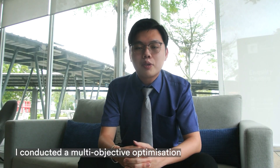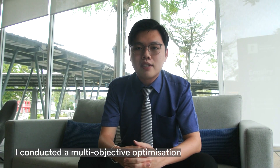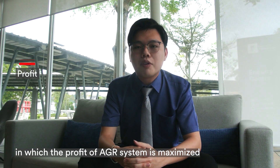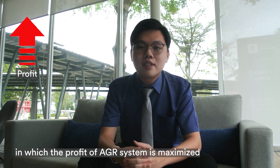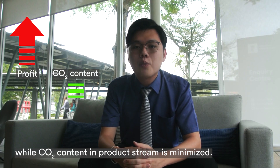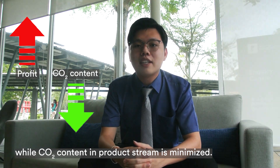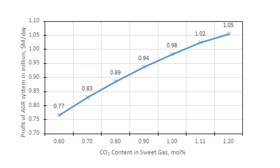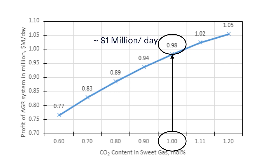I conducted multi-objective optimization in which profit of the AGR system is maximized while CO2 content in the product stream is minimized. The optimal solution selected has a CO2 content of 1% and a profit close to 1 million per day for an AGR system.